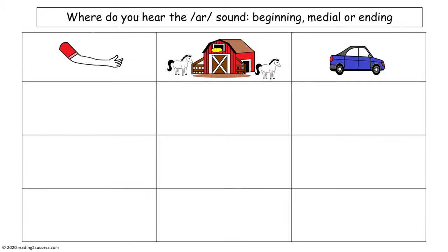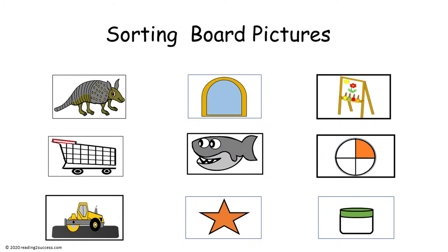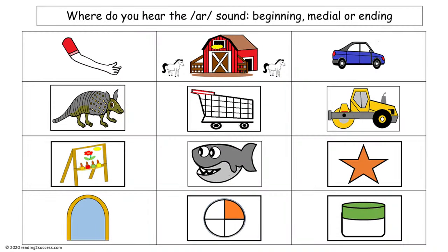This is the sorting board for the next activity. It asks kids where do you hear the R sound: beginning, medial, or ending position. The sorting board pictures are: armadillo, arch, art, cart, shark, part, tar, star, and jar. In the completed example — beginning: armadillo, art, and arch; medial: cart, shark, and part; ending: tar, star, and jar.